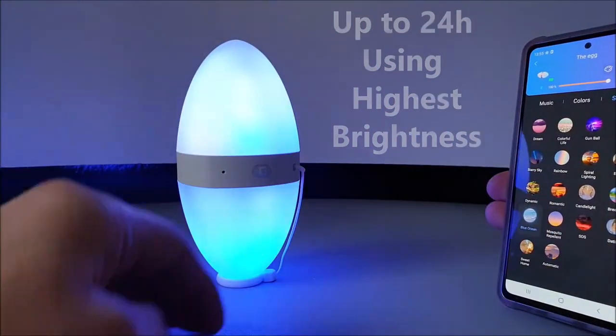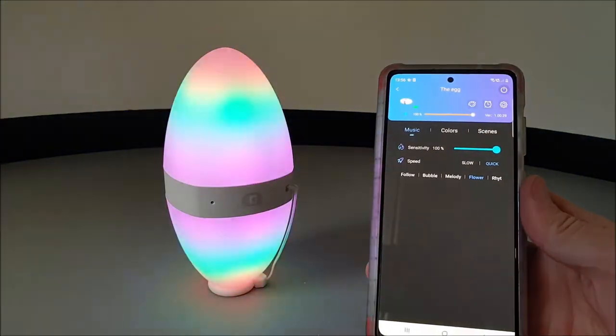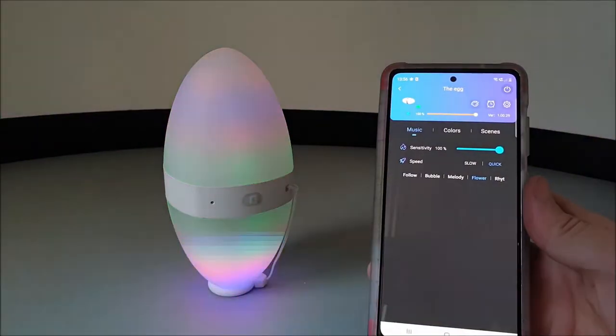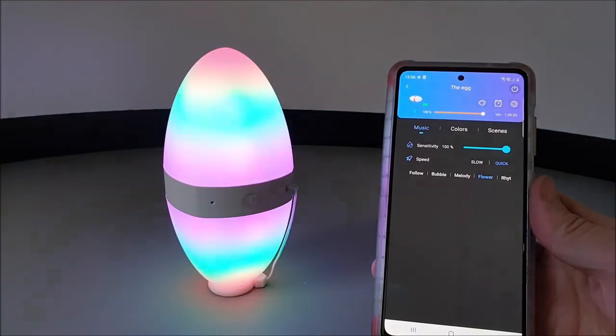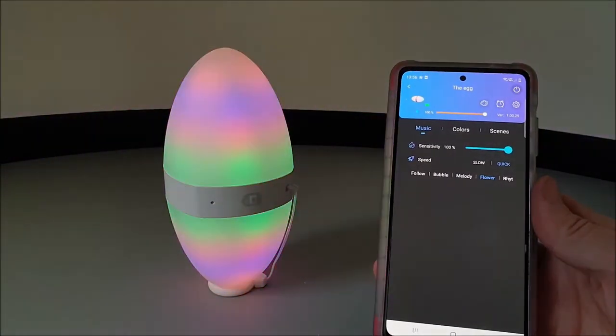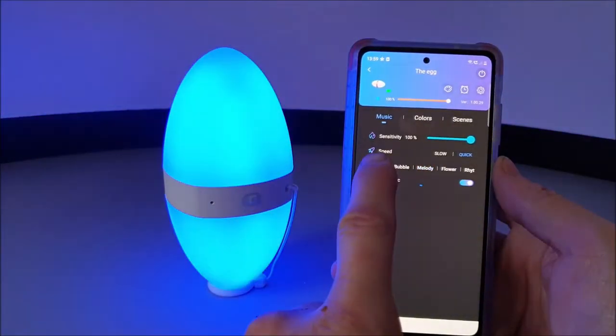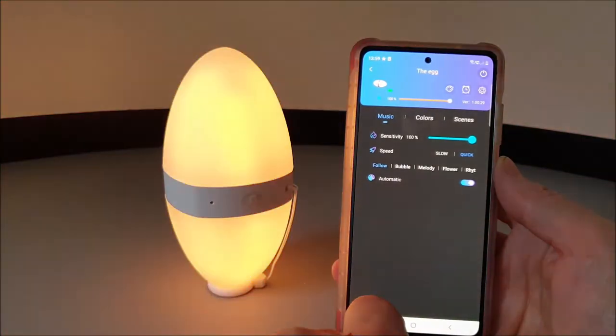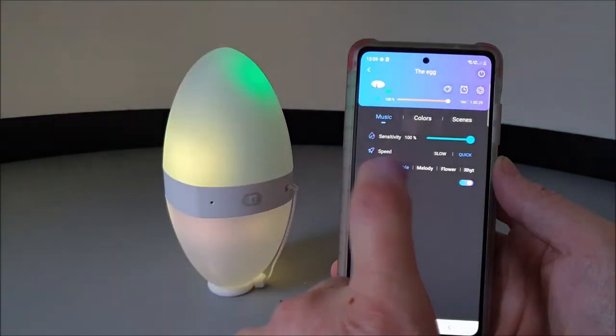Music mode is an absolute must if you're into your tunes. While you're banging them out, this light will add to the atmosphere. Every time you blast out a tune within your home, if you choose music mode, the light will pulse to every single beat.